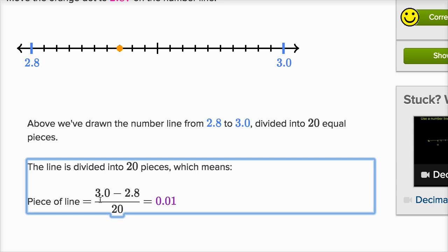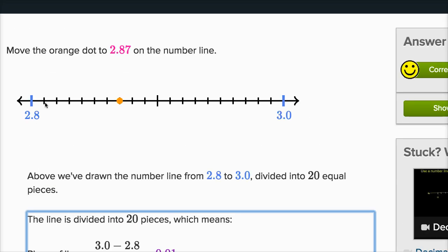And so they say that piece of the line is 3.0 minus 2.8, where that's going to be 2 tenths, and then you divide by 20 is 0.01. So that's another way that they're just saying that each of these is a hundredth. But we already saw that. 2.81, 2.82, 2.83, 2.84, 2.85, 2.86, 2.87.